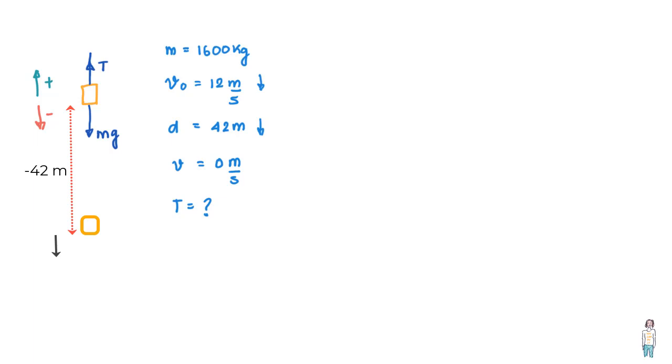Now what we'll do is we'll use Newton's second law of motion which says that the net force is equal to the product of mass and acceleration experienced by the body. So here we can see there are only two forces acting on this elevator, one is the tension T acting in upward direction.